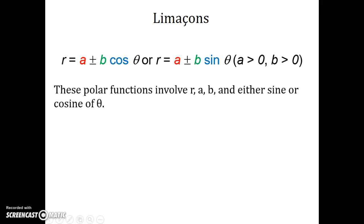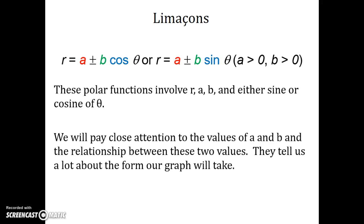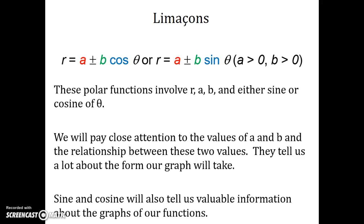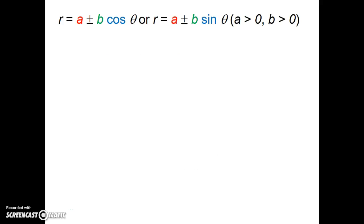They involve R, A, B, and either sine or cosine of theta. We have to pay close attention to the values of A and B and the relationship between them. Is A larger than B? Is A smaller than B? Are they equal? These tell us a lot about the form that the graph will take. Sine and cosine play a very valuable role too, so make sure all of that goes in your notes.